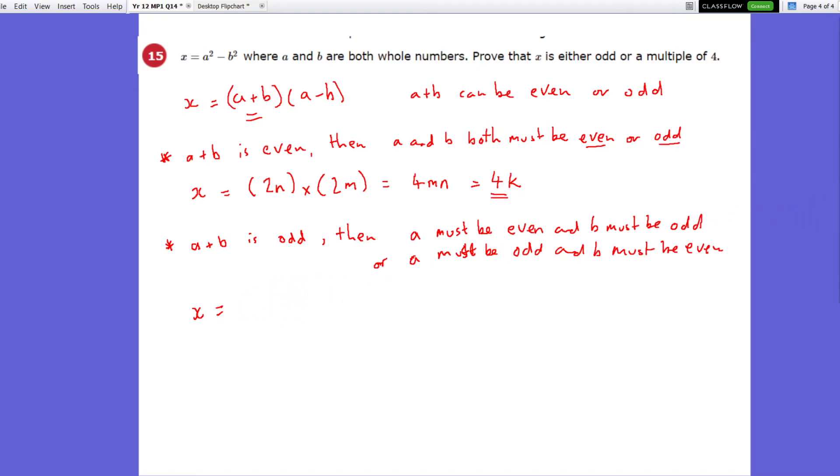just so that we're crystal clear with this proof. So let's say x can be 2p plus 1, and the other expression, a minus b, we can call that 2q add 1.